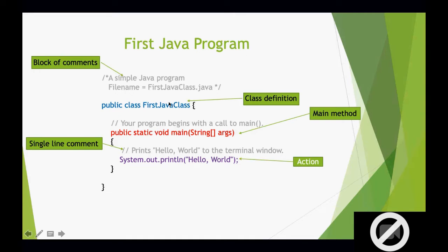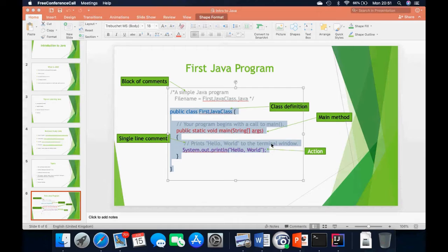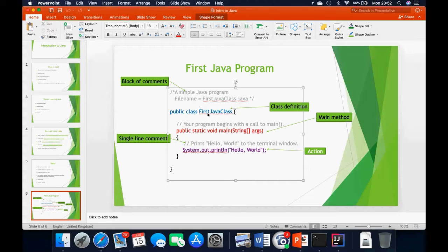This FirstJavaClass is going to be the name of the project that you created right from the start. We are going to be writing the first Java program for today's lesson. The line 'public class FirstJavaClass' is the class definition — this line uses the keyword 'class' to define a new class, and the new class we are defining can be any reasonable and readable name.